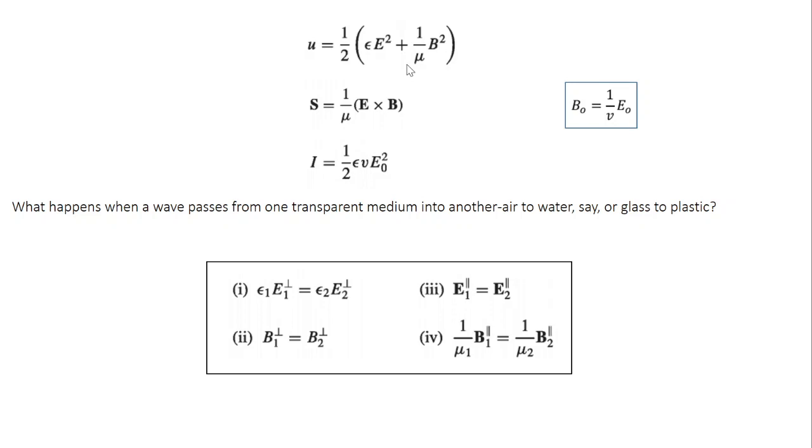You get the corresponding parameters in matter. So the energy density U equal to half epsilon E square plus 1 over mu B square. Similarly, pointing vector which talks about the energy flow per unit time, per unit area given by 1 over mu E cross B. Similarly, intensity which is the average value of pointing vector. This is half epsilon V E naught square.